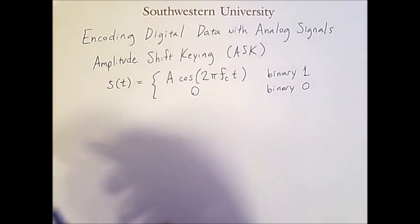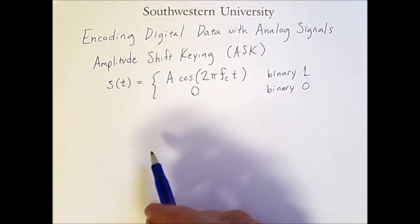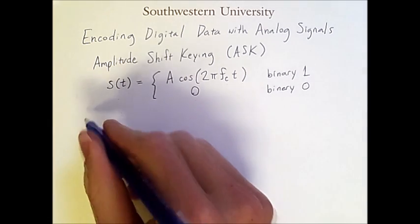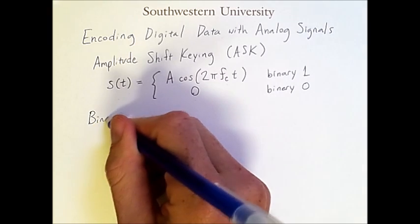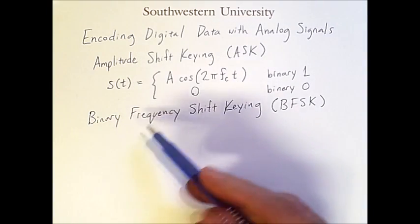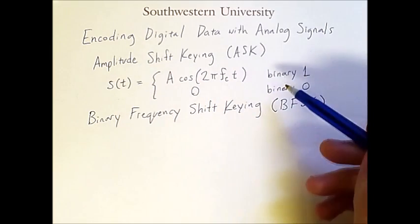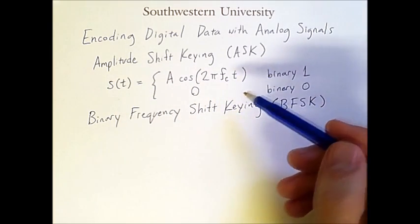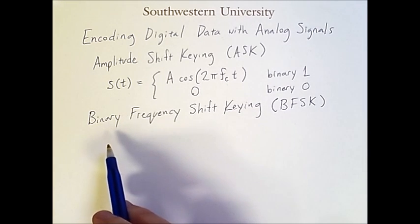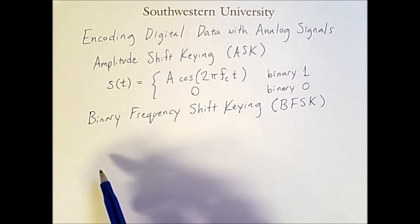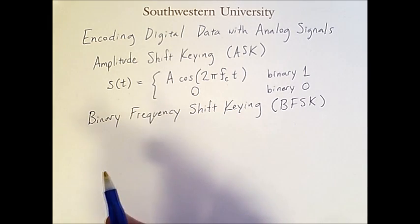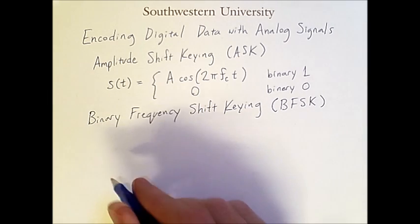But this is not the only way to encode digital data using analog signals. Instead of changing the amplitude, we could instead change the frequency. One scheme for doing this is binary frequency shift keying. Strictly speaking, amplitude shift keying is also binary in that there are only two options. The reason binary frequency shift keying explicitly uses the word binary is that there's another scheme called multi-frequency shift keying, where we can encode more signals than just 0s and 1s. But if we're only encoding 0s and 1s, we have a formula that looks like the following.